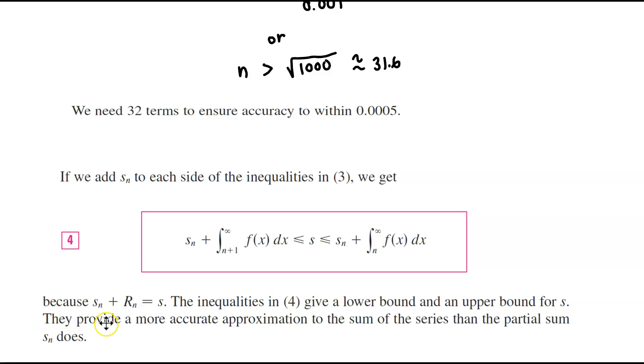Because s subscript n plus r subscript n is equal to s. Now the inequalities in 4 give a lower bound and an upper bound for s. And they provide a more accurate approximation to the sum of the series than the partial sum s subscript n does.